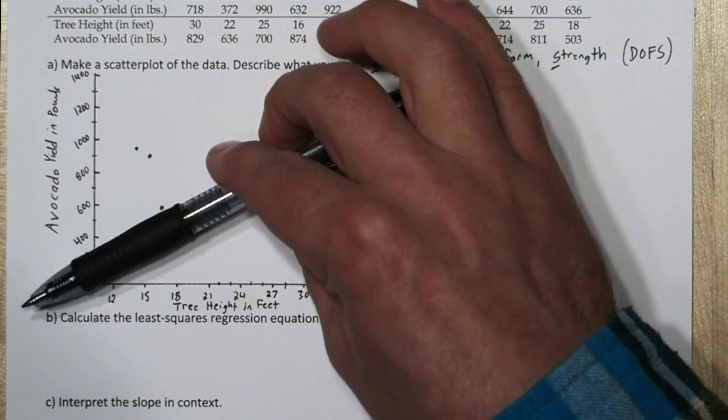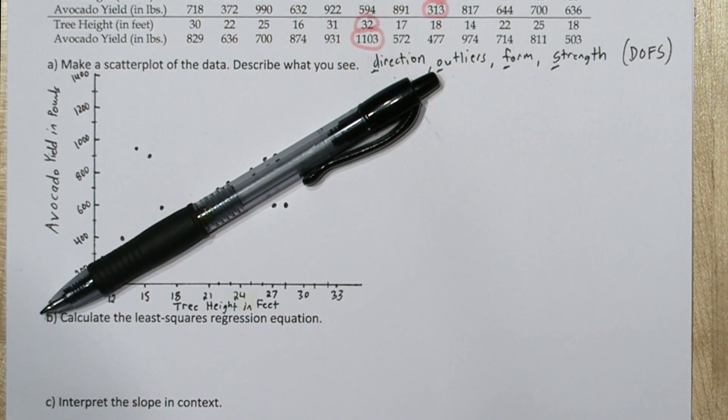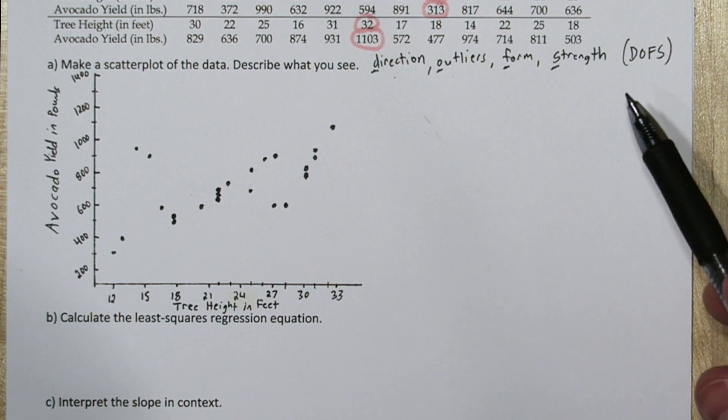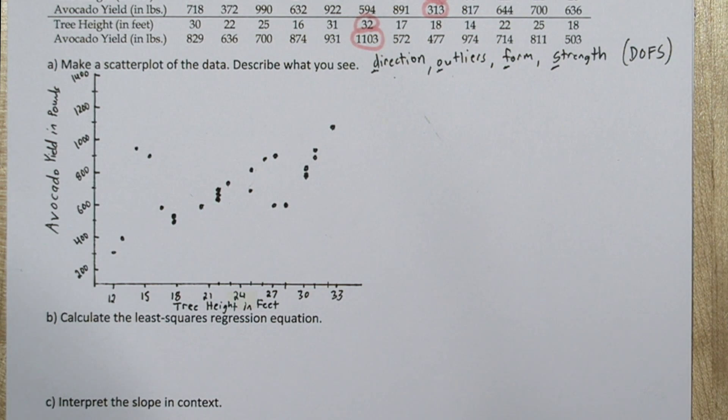For form, a line seems to fit the data quite well. And I would say our strength is moderately strong, because the points do fit our form, our line, fairly well.